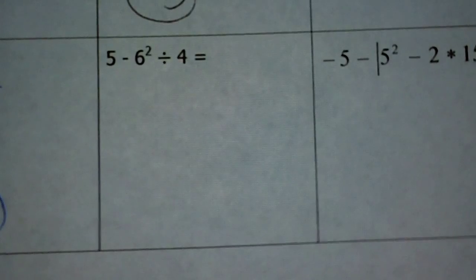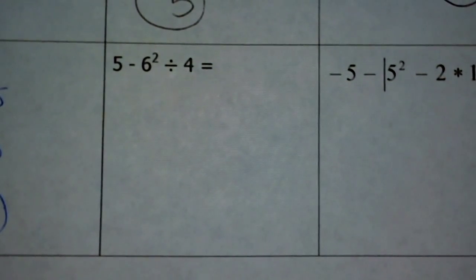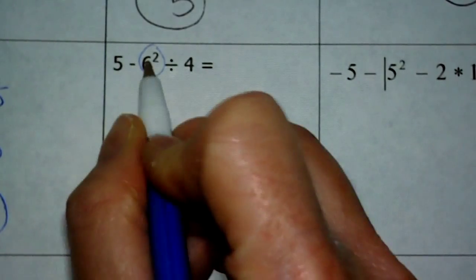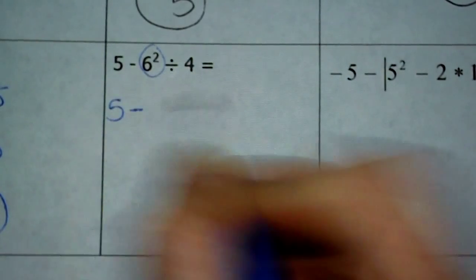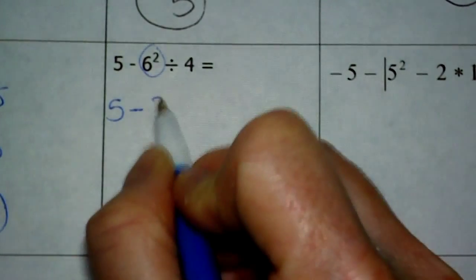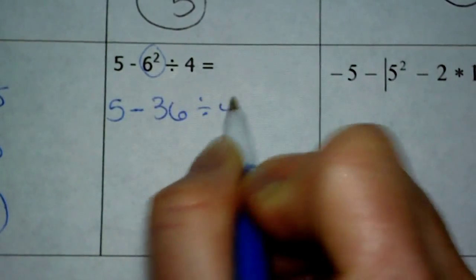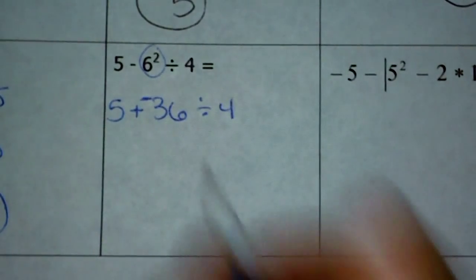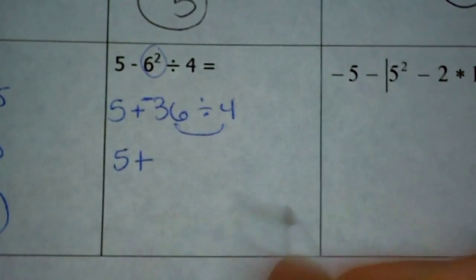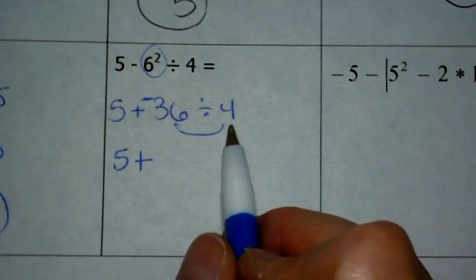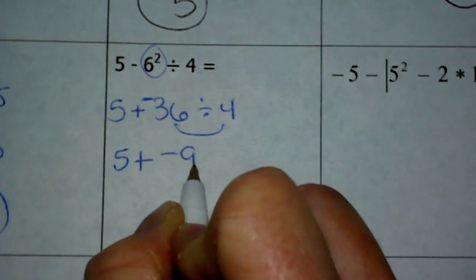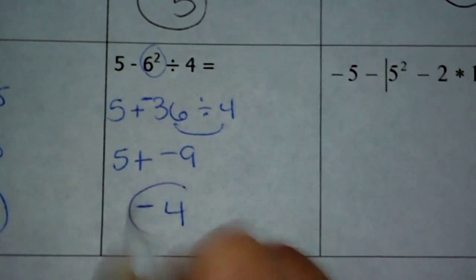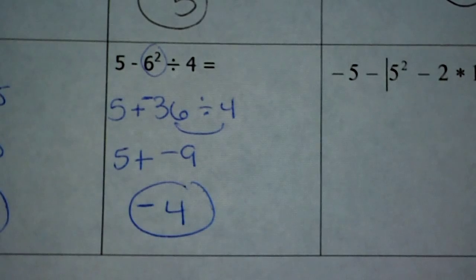This one is quite similar. I want to evaluate all my exponents first — there aren't any parentheses, so that's first on the list. 5 minus 6 squared: 6 times 6 is 36, divided by 4. Now that all my exponents are gone, I keep-change-change and divide before I add: negative 36 divided by 4 is negative 9. Then 5 plus negative 9: subtract digits and take the sign of the greater for a final answer of negative 4.